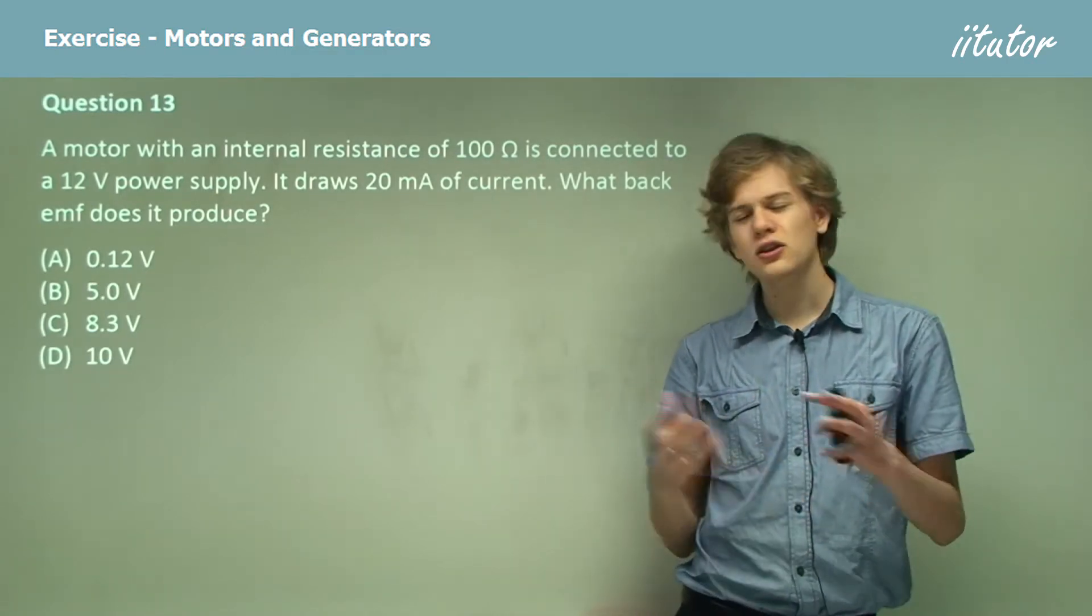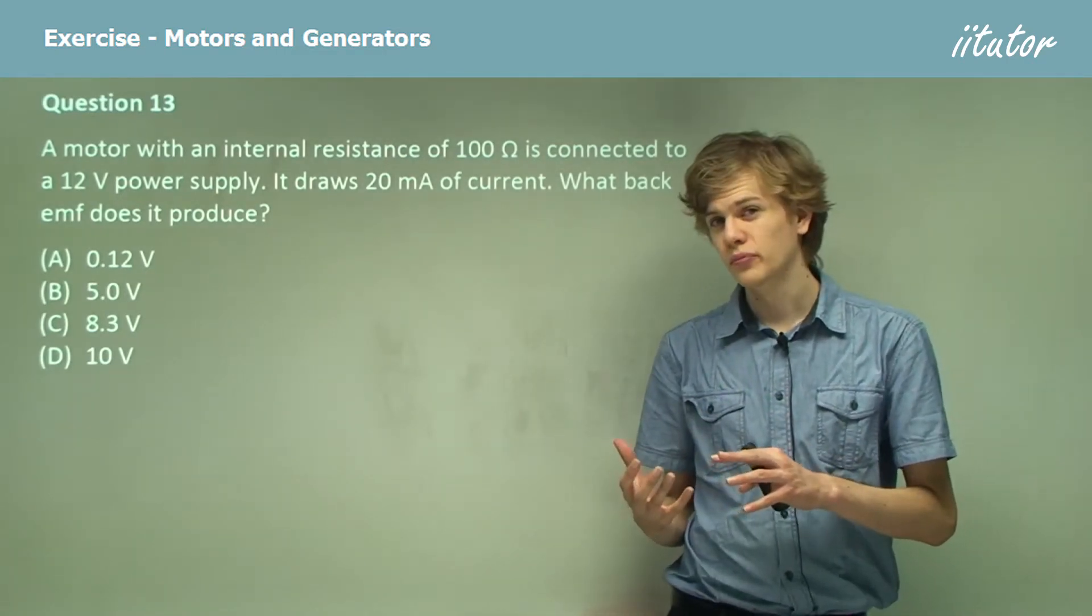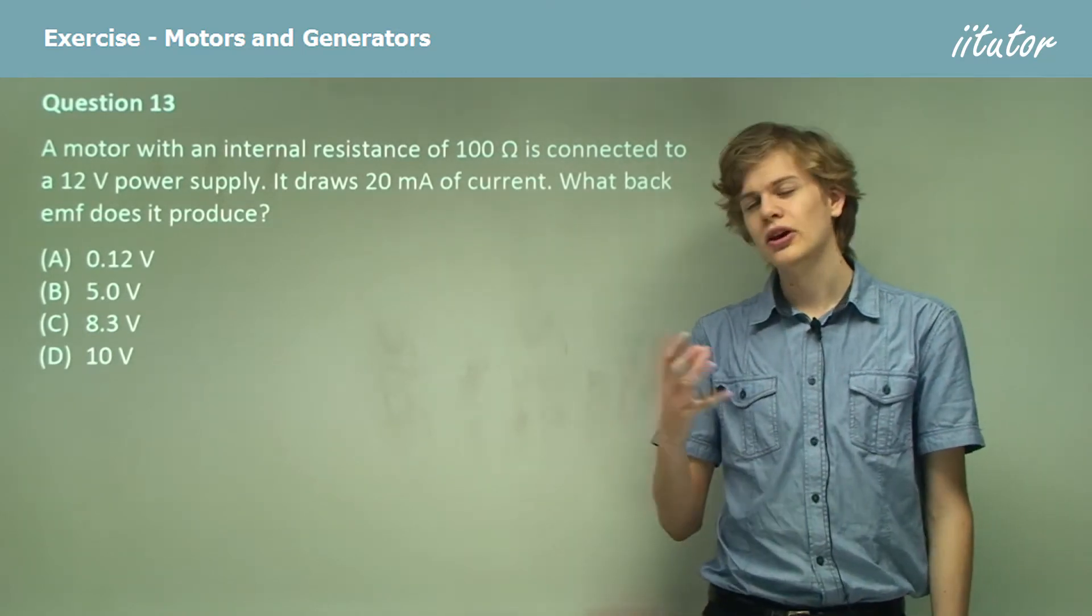To answer this question we need to figure out the effective voltage across the coil. Voltage equals current times resistance.